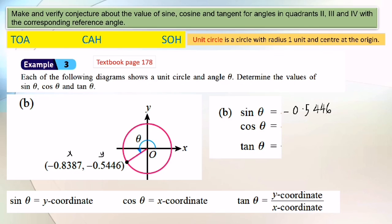Cosine theta refers to x-coordinate. X-coordinate is negative 0.8387. And tangent theta is y-coordinate over x-coordinate, so negative 0.5446 over negative 0.8387. So tangent theta equals 0.6493.